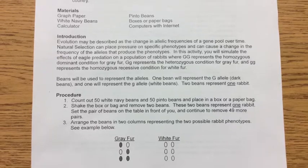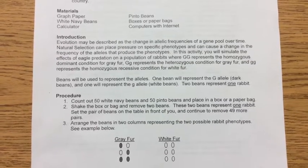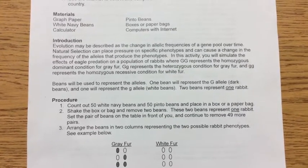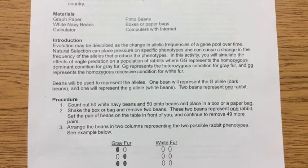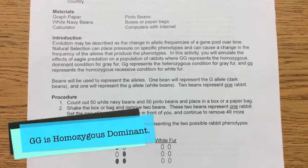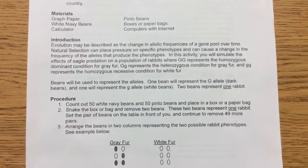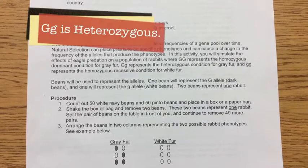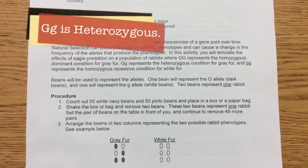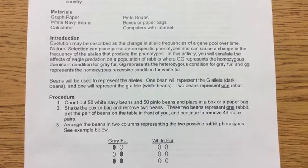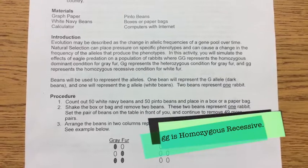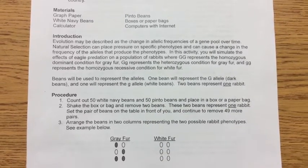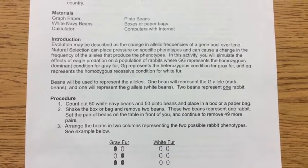In this activity, you will simulate the effects of eagle predation on a population of rabbits, where big G big G represents the homozygous dominant condition for gray fur, big G little g represents the heterozygous condition for gray fur, and little g little g represents the homozygous recessive condition for white fur. Beans will be used to represent alleles.